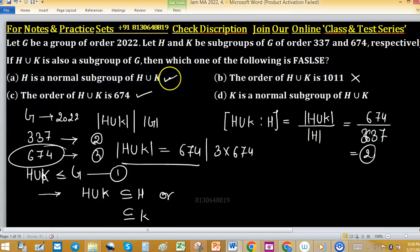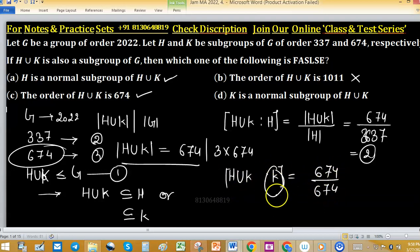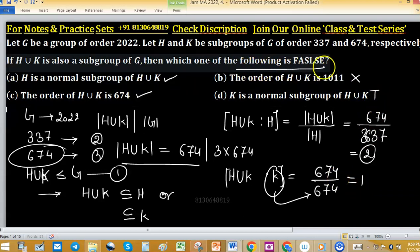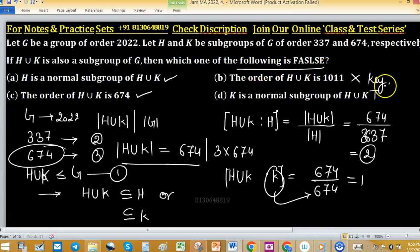And index of K with union equals to 674 upon 674, because order of K is 674, equals to 1. Option D is also true and we have to tell which one is false. So option B will be the right key.